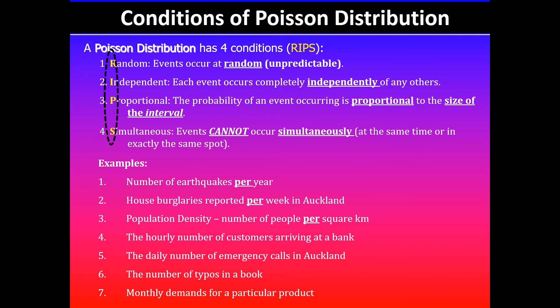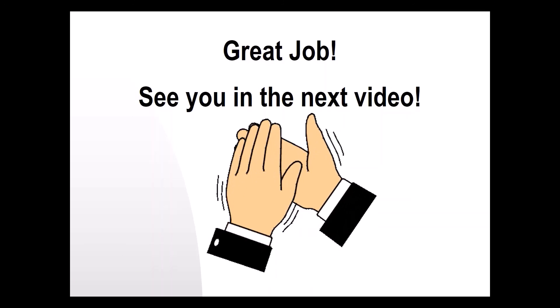Remember, for Poisson distribution you will need to be given only one parameter, and that parameter is the mean or the average. Thanks for watching and I will see you guys in the next video.